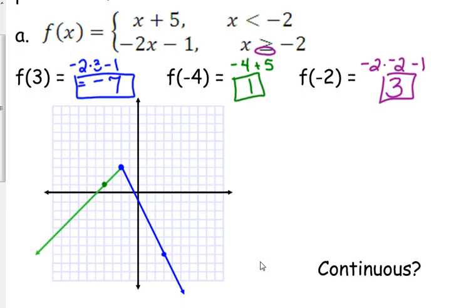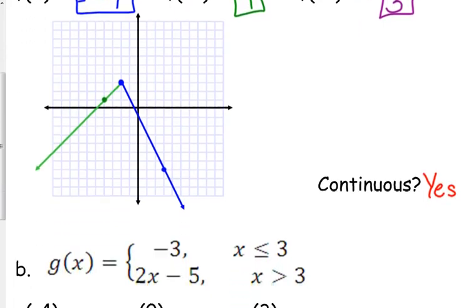This is a continuous piecewise function. Because look at what else happens — if we plug our boundary point, negative 2, into the other piece, we would also get 3 as an answer. That's where the point should be. So if that point is the same for both pieces, then it's going to be a continuous function. This one kind of looks like an absolute value, but the slopes are not the same on both sides — they have different slopes, so it's not an absolute value function, but it's kind of close to it.